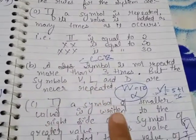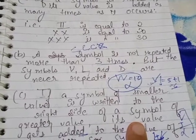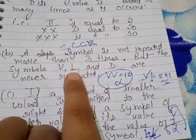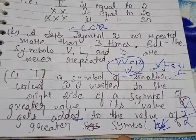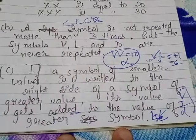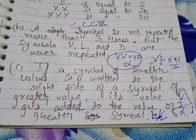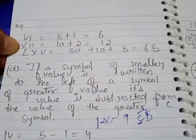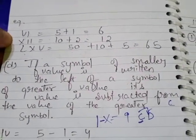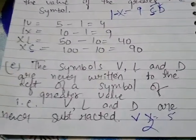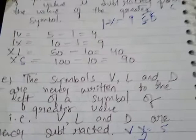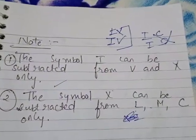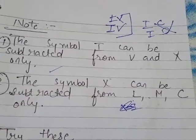Second rule: a symbol is not repeated more than three times. Any symbol cannot be repeated more than thrice. The three symbols which can never be repeated at all are V, L, and D. Third rule: whenever we write any symbol to the right side, its value gets added. Fourth rule: if a symbol is written to the left, its value gets subtracted. Symbols V, L, and D can never be written on the left side.